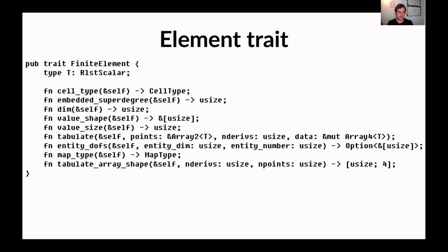The finite element lives on one triangle and you can do various things with it. You can ask: what is my cell type — am I a triangle or a quadrilateral? What is my degree, meaning the highest polynomial involved — what we call the embedded super degree? What is the dimension of my polynomial space? The value size and value shape are there to allow vector-valued elements, not yet implemented but planned for the future. Tabulate is a function which allows us to evaluate these polynomials at many points. We also have information about how you map between cells and define degrees of freedom.